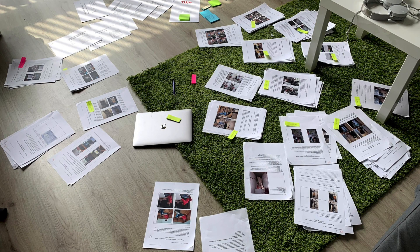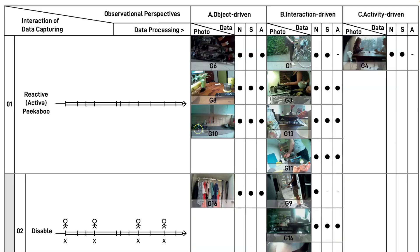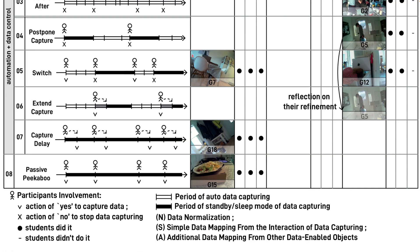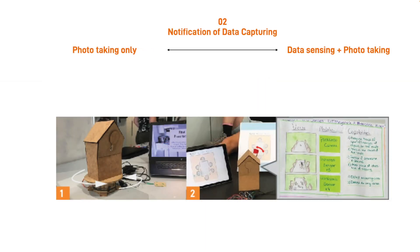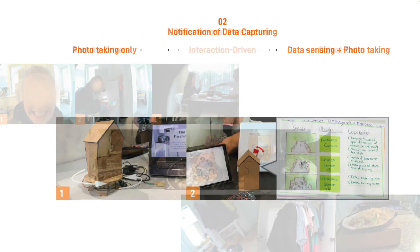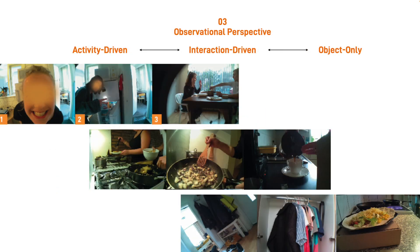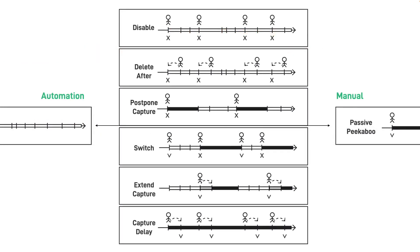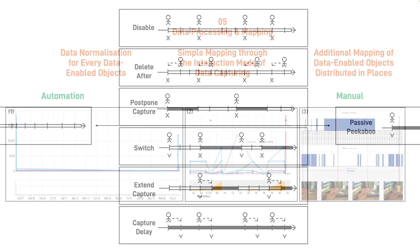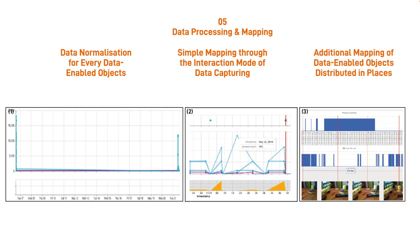We conducted a Thematic Analysis and identified five different design spaces, including: form, notification of data capturing, observational perspective, interactions of data capturing, and data processing and mapping. These findings can be seen in detail in our paper.